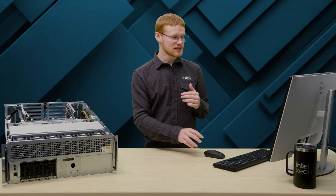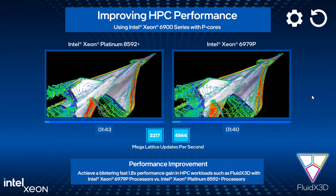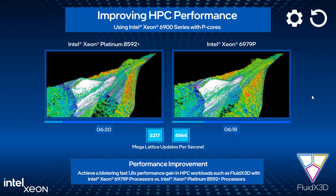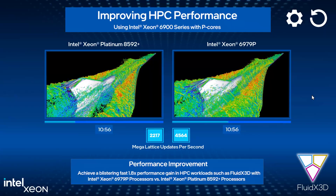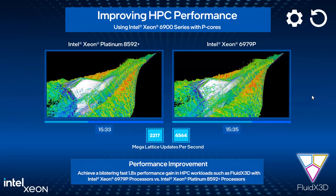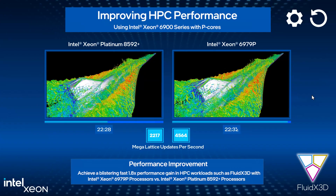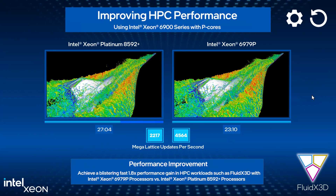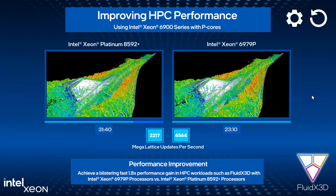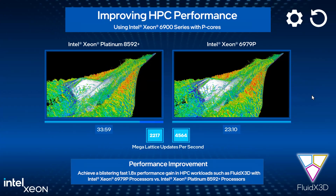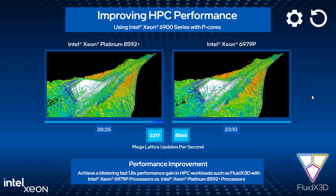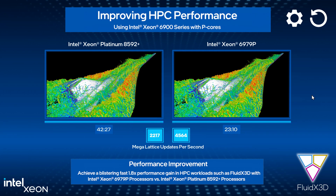Now let's take a look at a comparison. We performed a 4.3 billion cell simulation on both Xeon 6 and 5th Gen Xeon Platinum for comparison purposes. You can see that the Intel Xeon 6979P server is finished — it takes only 23 hours and 10 minutes — whereas the Intel Xeon Platinum 8592 Plus is still processing. That's up to a 1.8x improvement gen-on-gen.